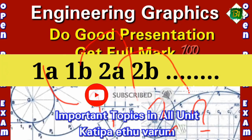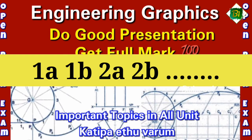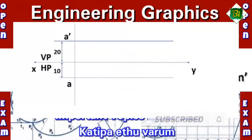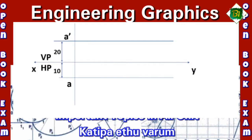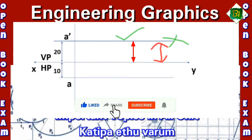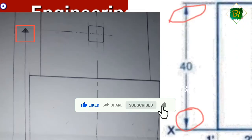I will tell you what the sum is for 1A and 1B. Now, how are you doing the presentation? The first thing is: all dimensions are in mm. You will work on your sum. The second part involves additional sub-parts of the sum.